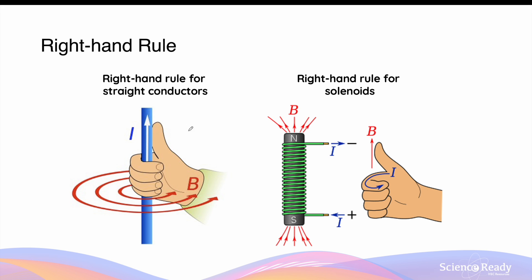Although the right-hand rule is used to determine the direction of the magnetic field for both straight current-carrying conductors and solenoids, they are used differently. In straight current-carrying conductors, we use our thumb to represent the direction of the conventional current, and our right fingers curl in the direction of the radial circular magnetic field. In contrast, in a solenoid, our thumb represents the direction of the magnetic field lines inside the solenoid — always going from the south pole to the north pole — and our curled fingers represent the direction of the conventional current through the circular coils.